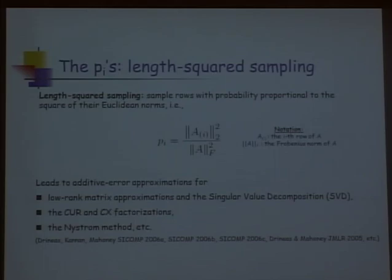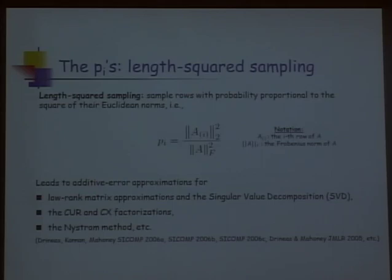Length-squared sampling leads to additive error approximations for things like the CUR and CX factorization, as well as for kernel matrices and the Nyström method. But you want to move beyond that — to have better probability distributions that get more accuracy when you sketch your matrix.